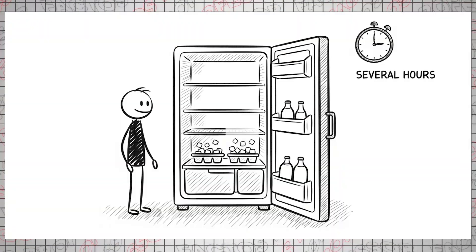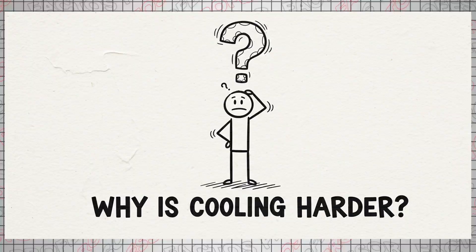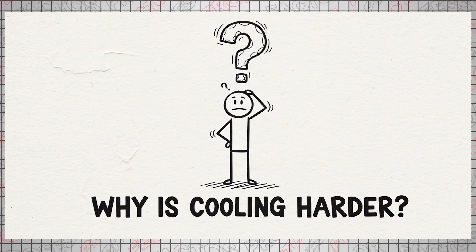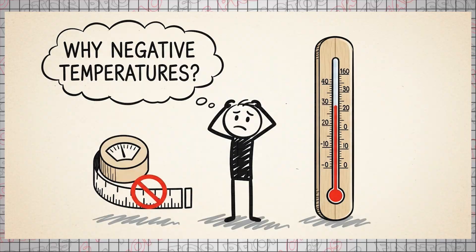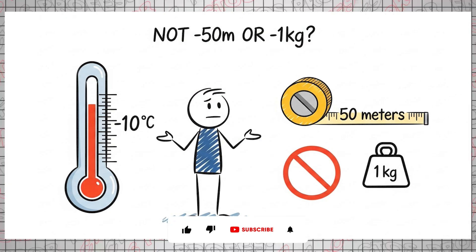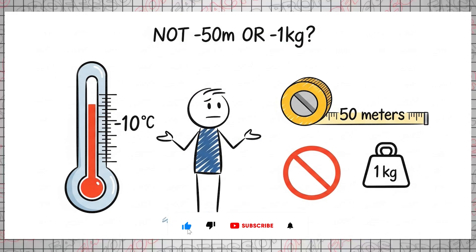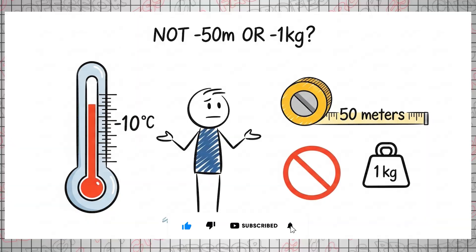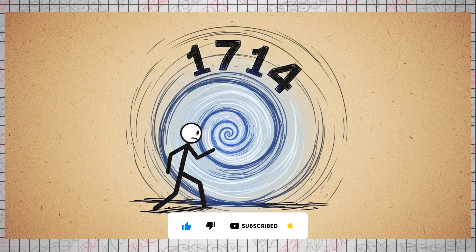Conversely, to create an ice cube at around minus 10 degrees Celsius, you need a refrigerator and several hours. Why is reducing temperature so much harder than increasing it? And why is temperature the only measurement scale with negative values? Why do you have minus 10 degrees Celsius but not minus 50 meters or minus 1 kilogram?